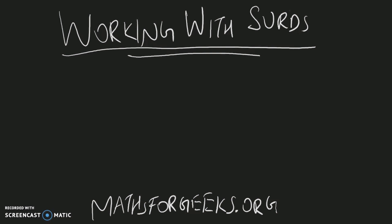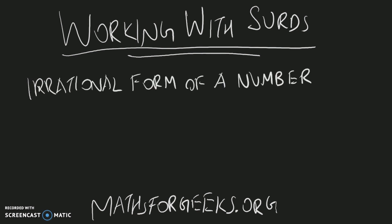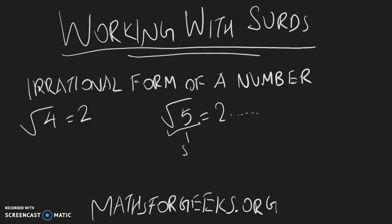Today we'll be looking at surds. A surd is basically an irrational form of a number. For example, the square root of four is two — it is a whole number with a complete answer. However, the square root of five gives two point something, which does not produce a whole number answer, and therefore this is considered a surd. The square root of six and seven are also surds. The square root of nine equals three, so it is not a surd because the answer is rational, whereas the answers for surds are irrational.